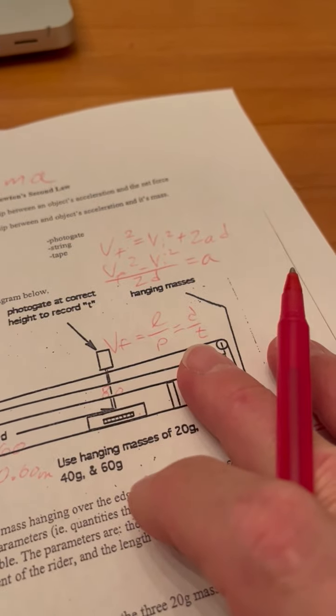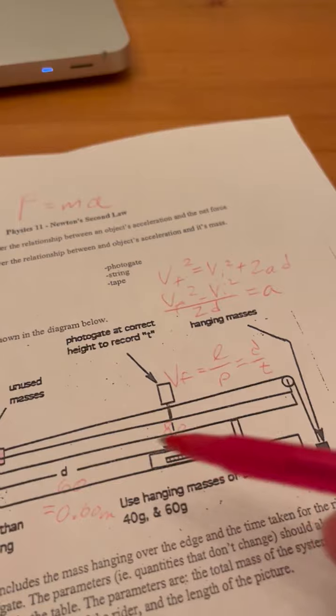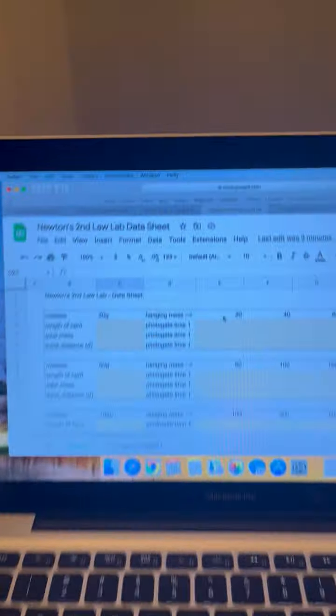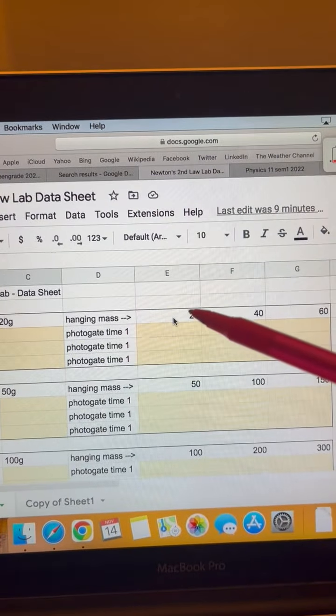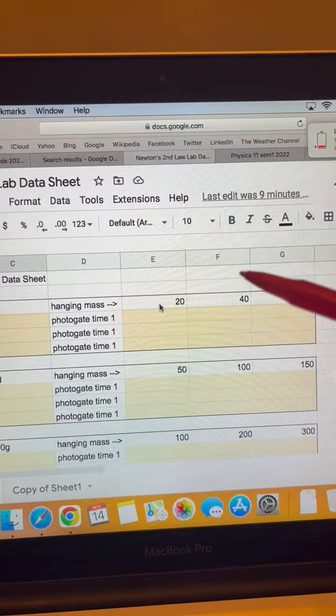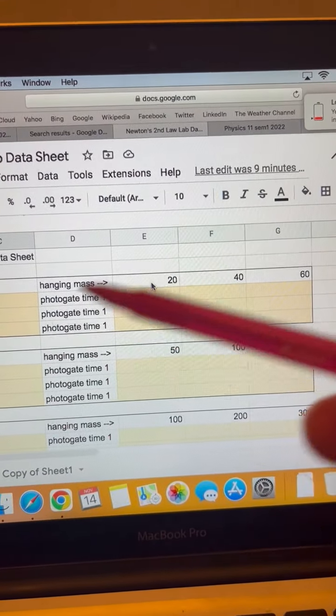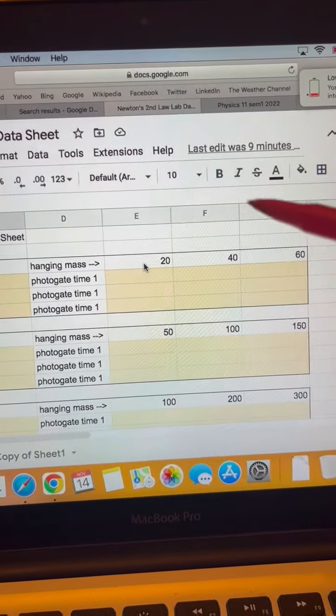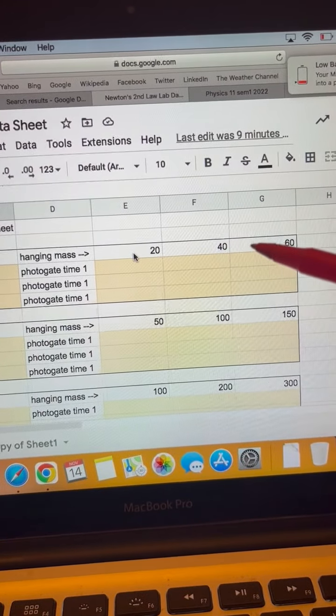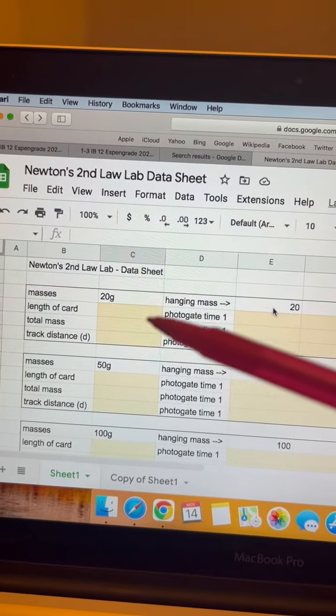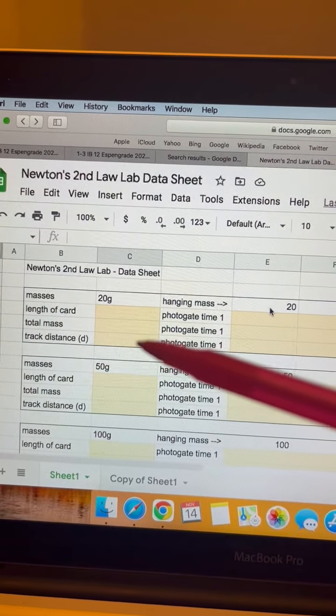Each of you only has to be in one group that does just one of these things. You're going to hang the 20 grams and hang the other two 20s on the rider, get three times. Then you're going to move one mass from the rider to hanging. So now you have 40 grams hanging. You're going to get three times. And then you're going to move all three masses to hanging, and then you're going to get three times. You're going to get the length of your card, total mass, and the distance of the track.